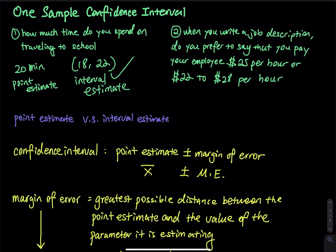So when people write a job description, they don't say I pay you $25 per hour. Because the problem is if you say $25 per hour, that is too exact. You want to be more flexible. When you pay people, you don't know who these people are. When you write a job description, you never know who is going to apply for it. Different people have different job experience. So that's why when you set up the range of salary, you want to be more flexible — for example, you want to pay $20 to $28 per hour depending on experience.